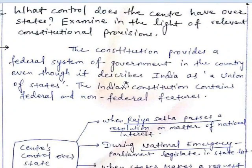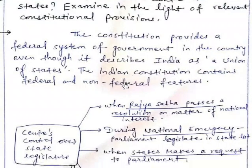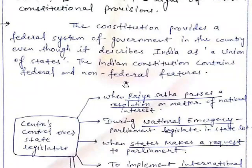The first question is: what control does the center have over states? Examine in the light of relevant constitutional provisions. The Constitution provides a federal system of government in the country, even though it describes India as a union of states. The Indian Constitution contains both federal and non-federal features.